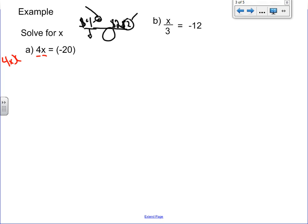Let's try this first example. 4 times x equals negative 20. The opposite of 4 times is going to be divided by 4. The line there just means divided by. Now we have 4 divided by 4, which is just 1.